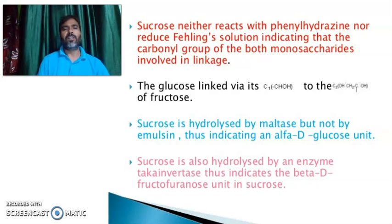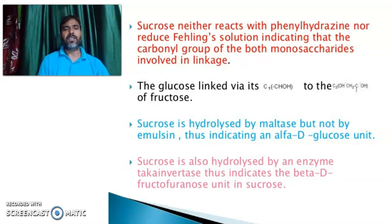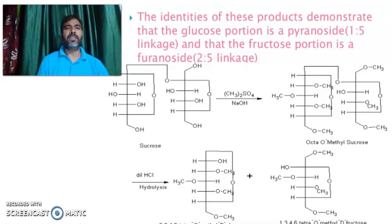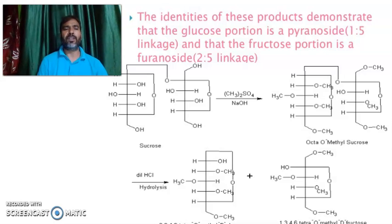Sucrose is hydrolyzed by maltase but not by emulsin, thus indicating an alpha-D glucose unit. Sucrose is also hydrolyzed by the enzyme yeast invertase, indicating the beta-D fructofuranose unit in Sucrose. The identities of these products demonstrate that the glucose portion has a pyranose 1,5-linkage and that the fructose portion has a furanose 2,5-linkage.